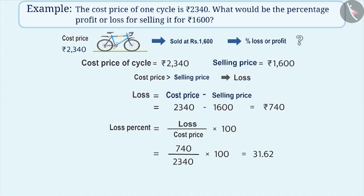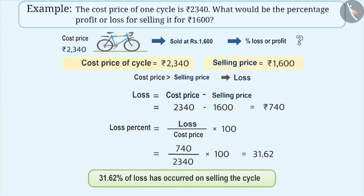Therefore, if the cost price of the cycle is 2,340 rupees, then selling it at 1,600 rupees incurs a loss of 31.62 percentage.